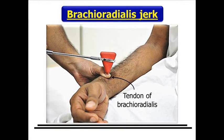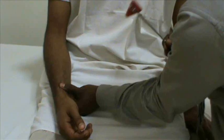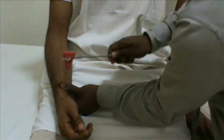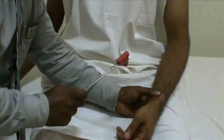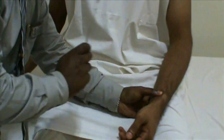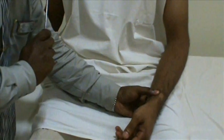Place the subject's arm in a semi-pronated position. Strike the radius 1 to 2 inches above the wrist over its styloid process. Observe the flexion at the elbow and the supination of the forearm.